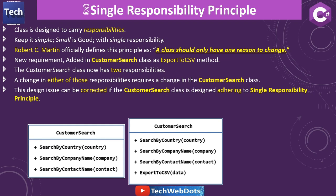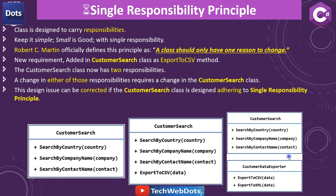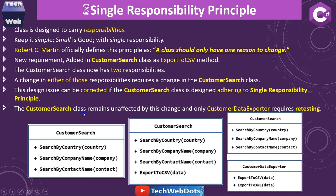This design issue can be corrected by adhering to Single Responsibility Principle. In the corrected version, we have the CustomerSearch class containing only search-related methods: SearchByCountry, SearchByCompanyName, and SearchByContactName. We create another class called CustomerDataExporter in which we can mention any type of export feature. Now every class has its own single type of responsibility, and in this way we can solve the problem of handling multiple responsibilities.